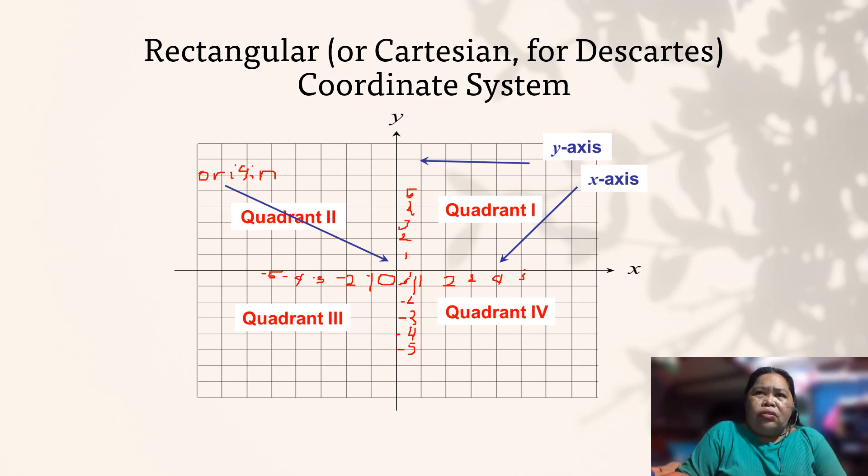So how are we going to plot? By plotting, we know that for example if you are looking for (2, 4), that means you are given x is 2 and y is 4. So if you are going to plot this, it is in this part. It's in this part, alright.